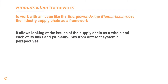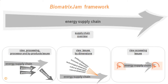To work with an issue like the Energivende, the Biometrics GEM uses the industry supply chain as a framework. It allows looking at the issues of the supply chain from different systemic perspectives. We can either look at the supply chain as a whole or look at each of its links and sublinks. This is the homepage of the presentation depicting the different aspects of the Biometrics GEM framework. We can view the overview of the energy supply chain here. In biometric systems theory, a supply chain is an activity system depicted by an arrow.